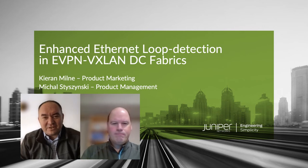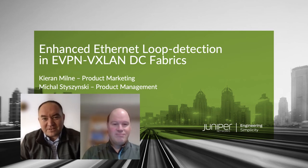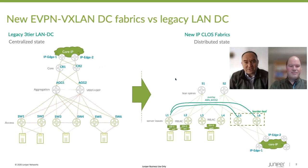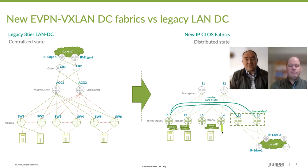Hey Kieran, I have a cool feature called Enhanced Loop Detect, which completely eliminates spanning tree in our data center fabrics. So even if we move from the traditional centralized architecture model with access aggregation core, now we are moving to the IP fabrics using EVPN and VXLAN topologies. There is still a little bit of a risk of creating Ethernet loops even in EVPN and VXLAN. You have built-in EVPN loop protection mechanisms.